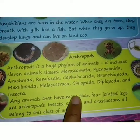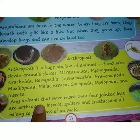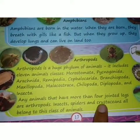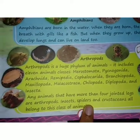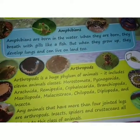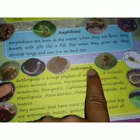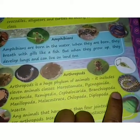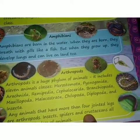Any animals that have more than four jointed legs are Arthropods. Insects, spiders, and crustaceans all belong to this class of animals. So all those who have more than four jointed legs fall into the Arthropods category, including spiders, insects, and crustaceans.